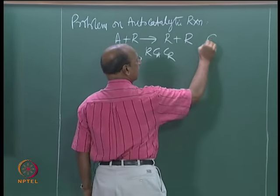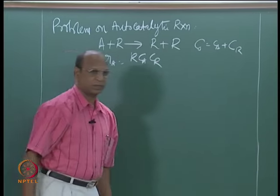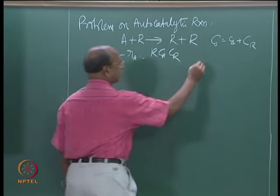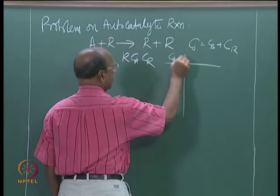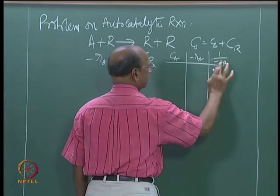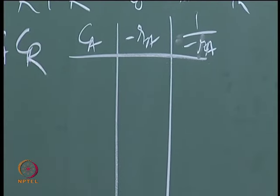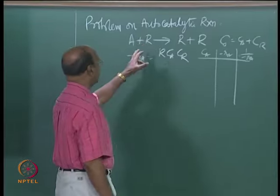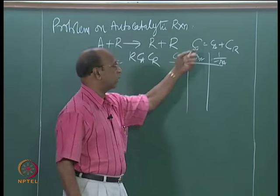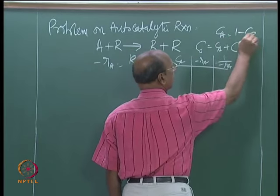We also have a relationship here: C_naught equals C_A plus C_R. So what you want is the rate, where you calculate 1 by minus R_A versus C_A. You also know that total C_naught equals 1, so 1 minus C_A equals 1 minus C_R.